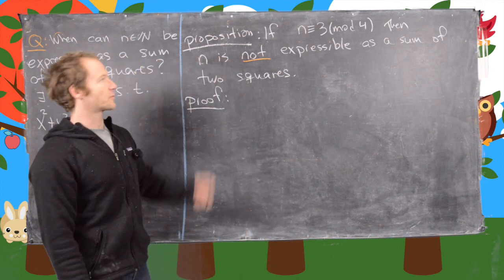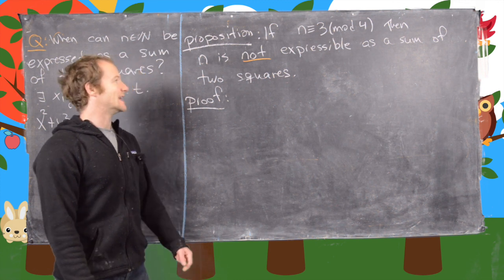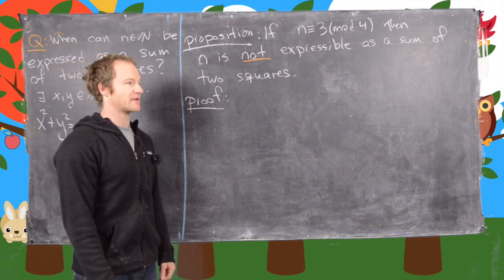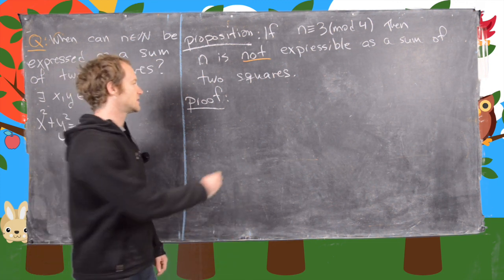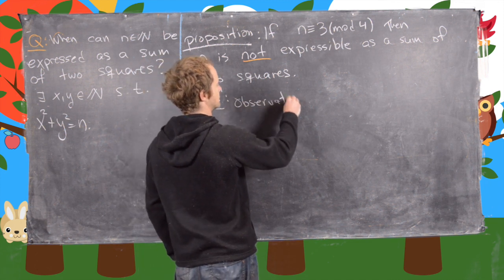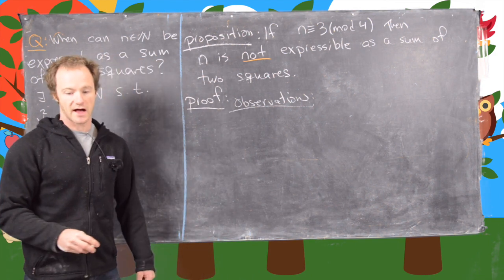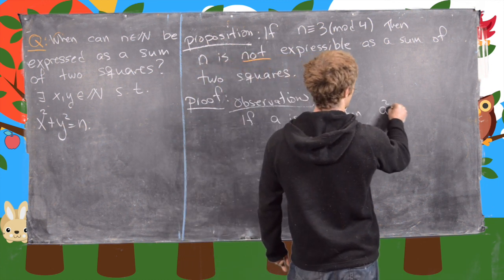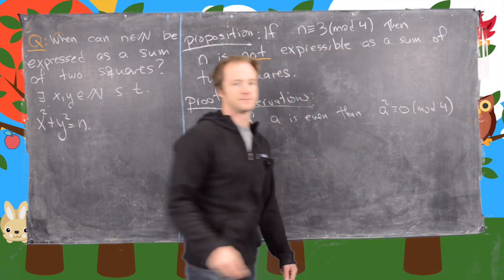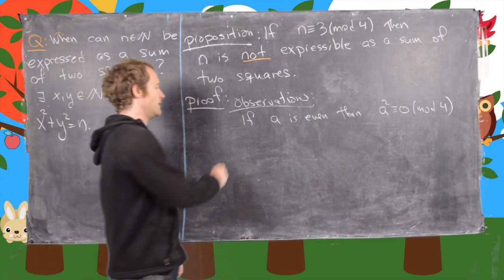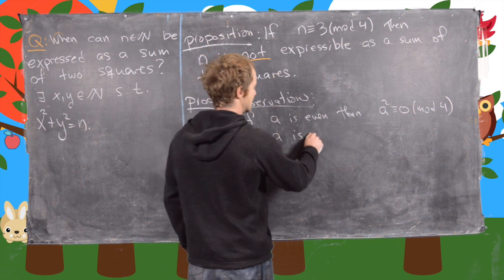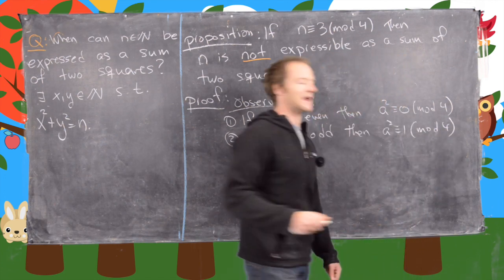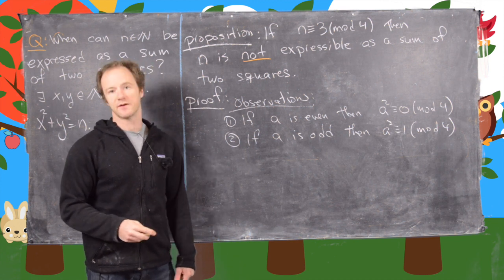Next we want to look at the following proposition: if n is congruent to 3 mod 4, then n is not expressible as a sum of two squares. This is actually something you've probably already seen in a homework problem. We start with two easy observations: if a is even, then a squared is congruent to 0 mod 4; and if a is odd, then a squared is congruent to 1 mod 4 — that essentially comes from the fact that 3 times 3 is 9, which is 1 mod 4.